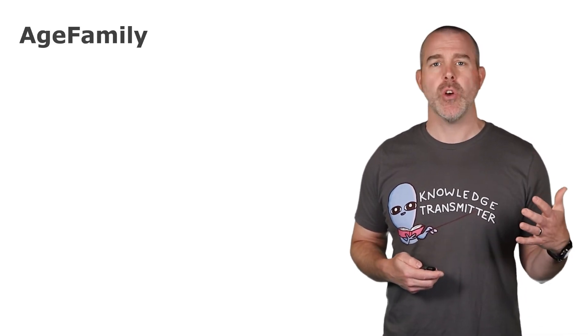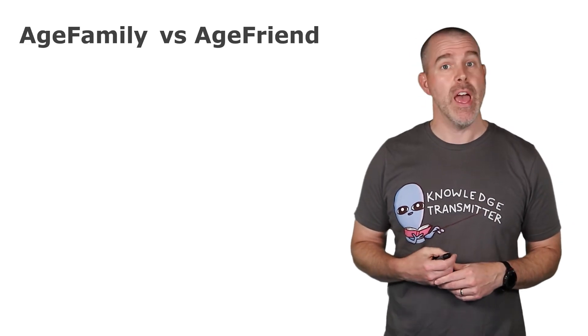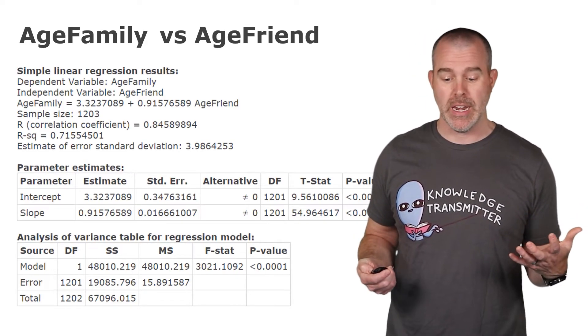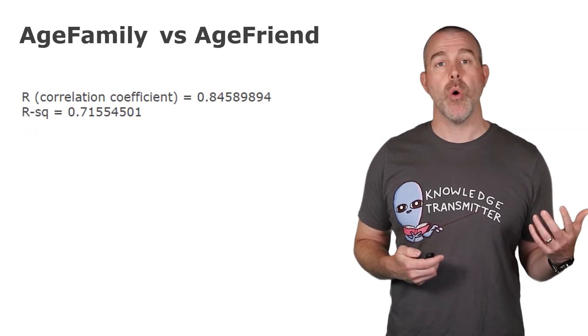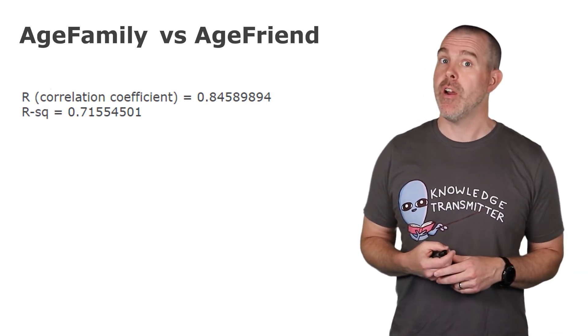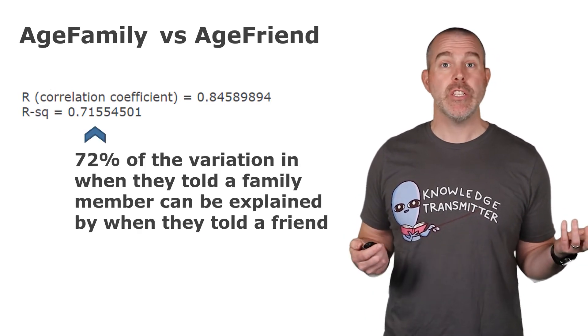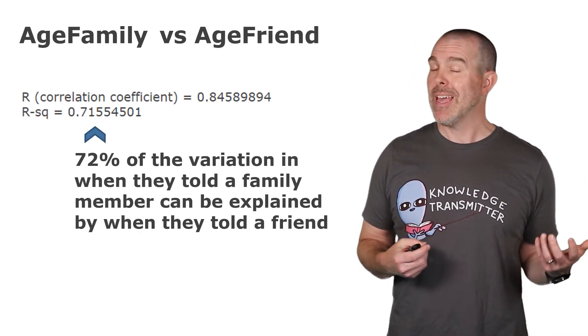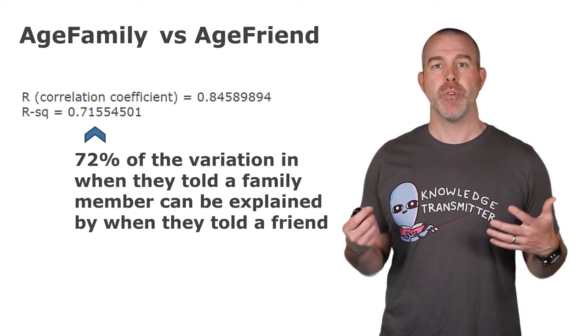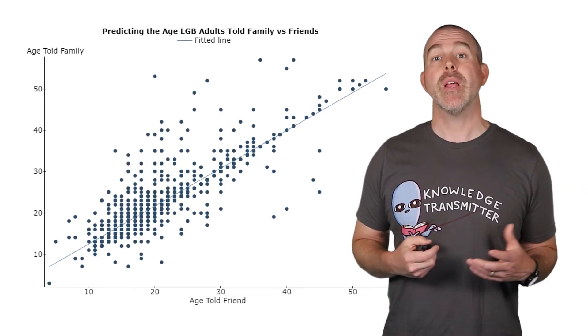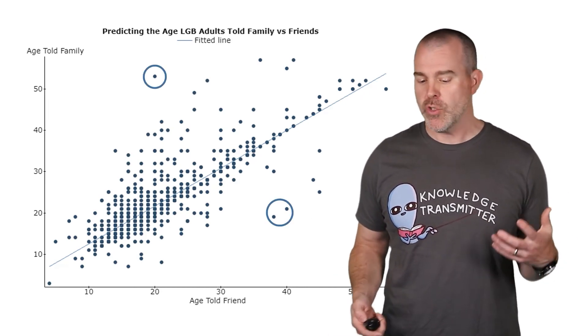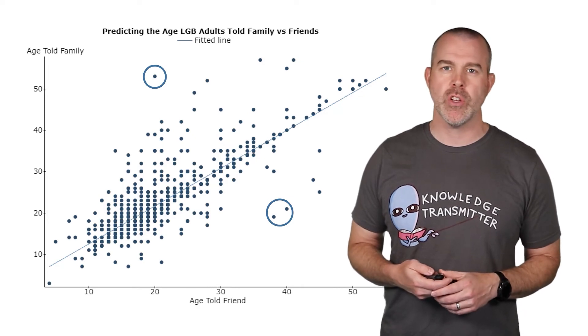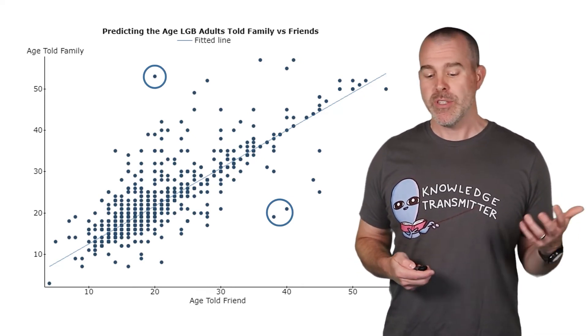Let's talk about some examples and show some analysis. The first one we're going to do is in the LGB life and health data set. We have the age that they told the family their sexual orientation and the age that they told the friend. It seems like those would be very strongly related. Here's our output. If we look at the correlation, pretty strong, 0.846. Very strong. R squared, 72%. So 72% of the variation in when they told their family can be explained by when they told their friend. If you know one, you pretty much could predict the other one based on the model. If we look at the scatter plot, we do have some outliers. There's so many other points near there. They're not going to be influential though. So I didn't even bother taking them out of the data and checking that slope.